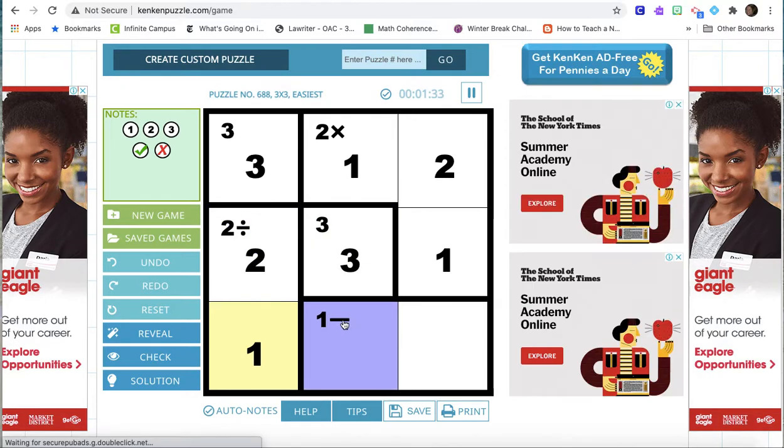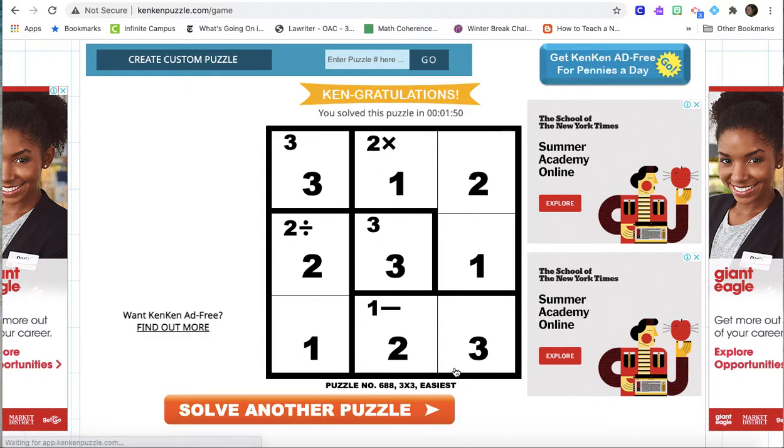You can kind of see with the different operations. I have to subtract here to get one. Oh well that'll work. Look. I have three and two are the only numbers left. I just have to be careful. Right? I can't put three here because of the three. So I have to put that two. And I can put three here because I don't have a three in the column yet. Yay!